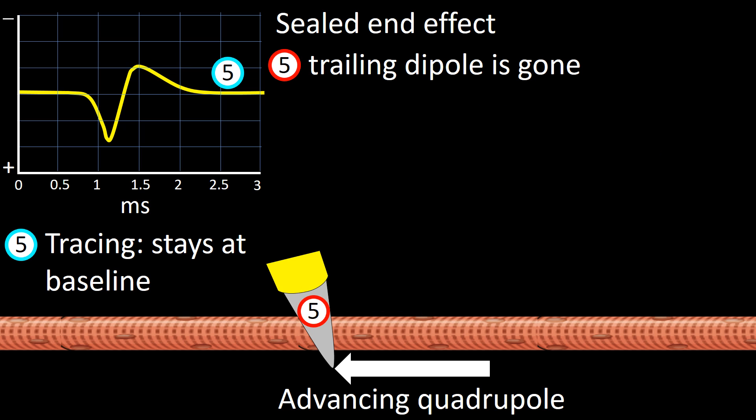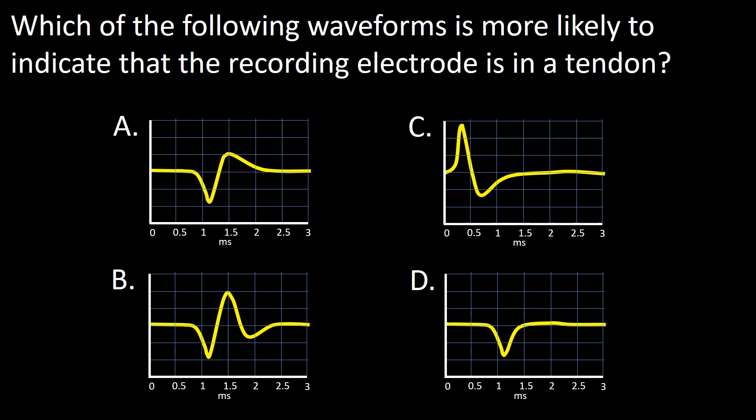In stage 5, the tracing is back to baseline since there is no longer any current impacting the electrode. So the answer to this question is A. Thank you very much for your attention.